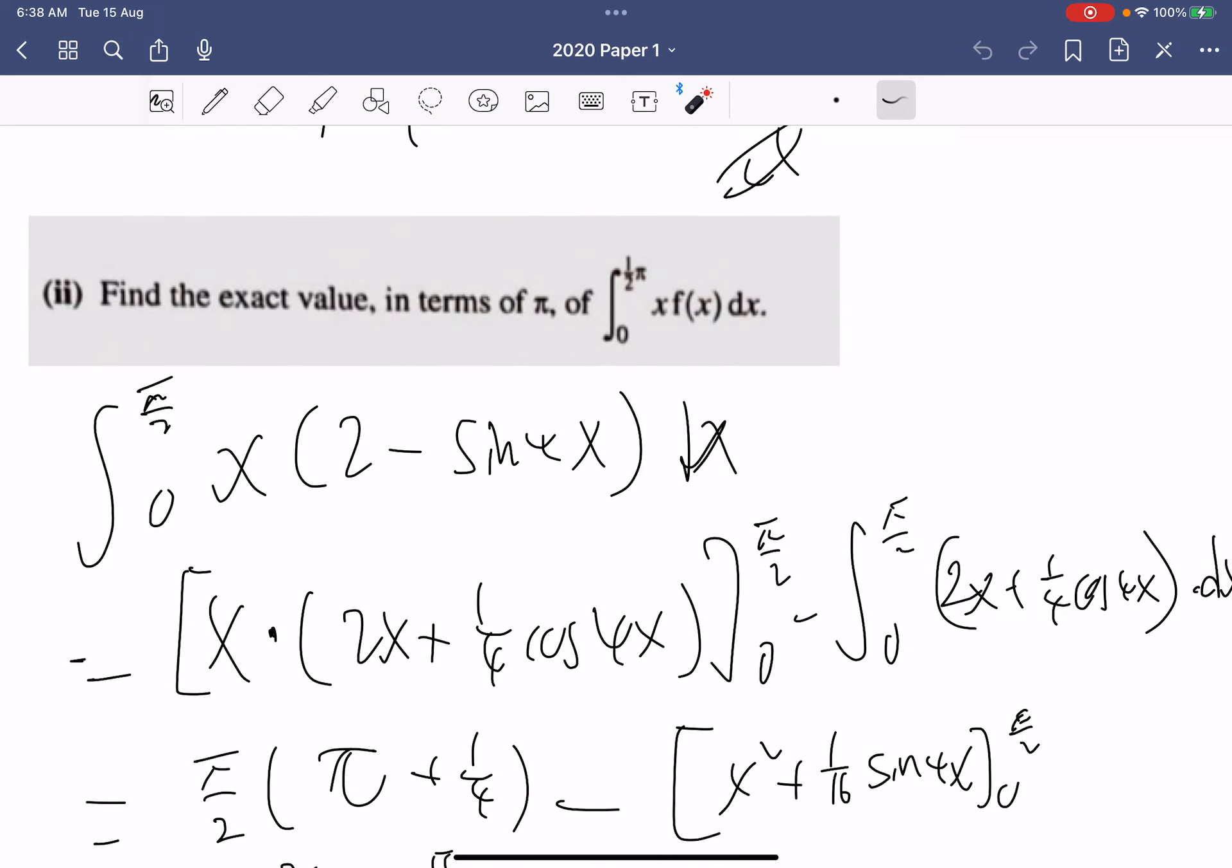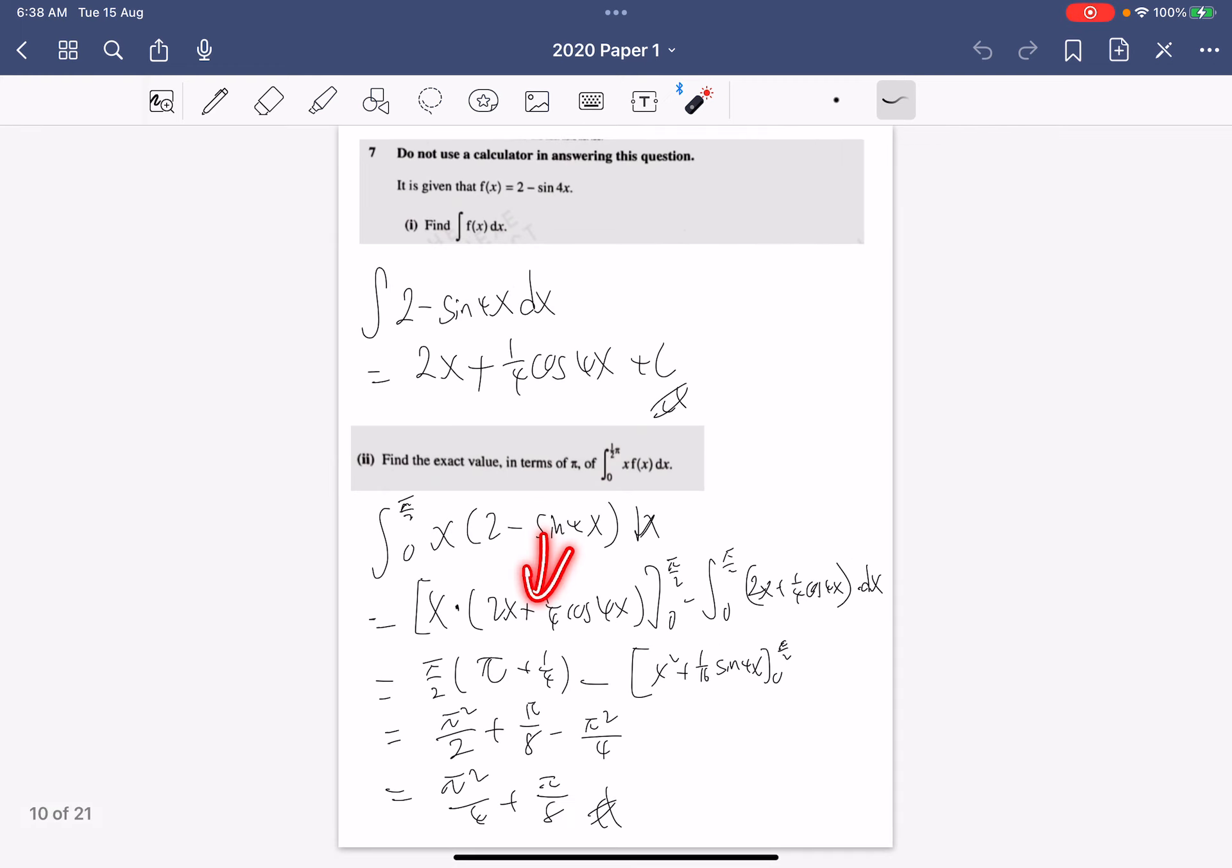Other ways of doing it will be just multiply it in and then integrate 2x to be x squared. But then you got this x sine 4x and you'll still need to use integrate by parts in that case, so you might as well just use it directly at the start.